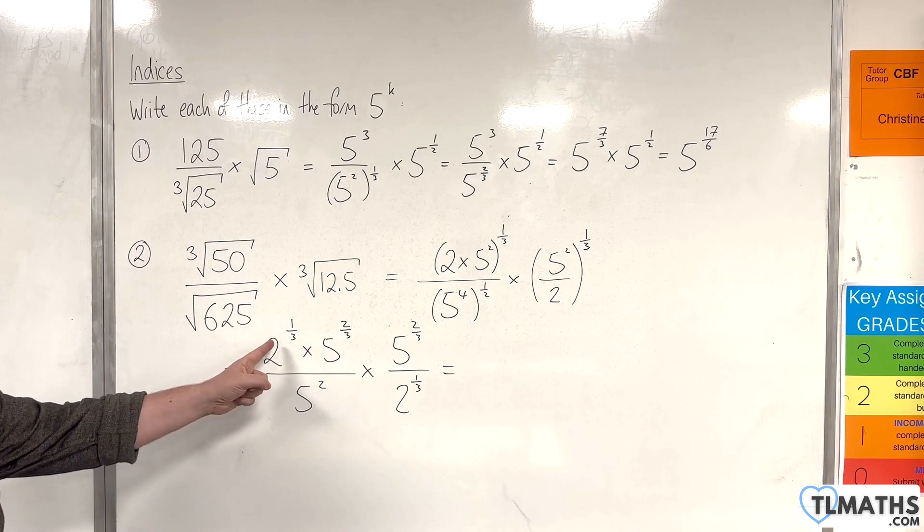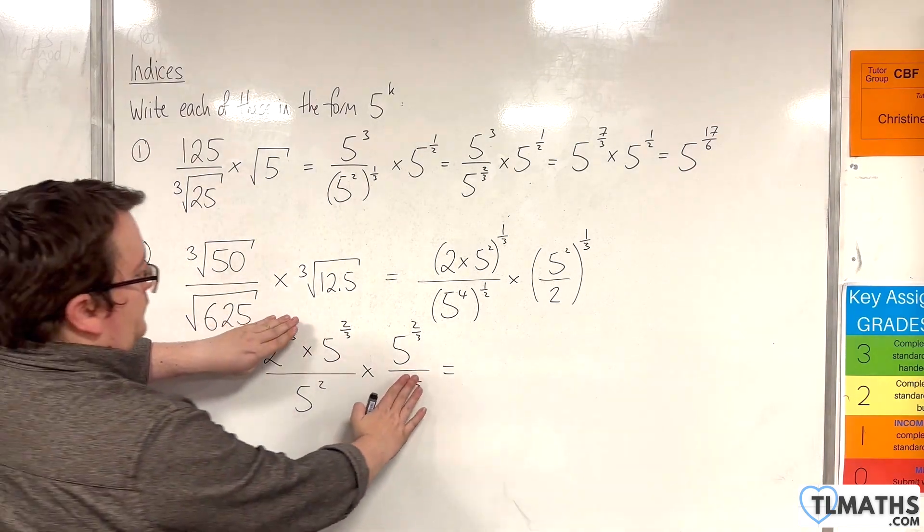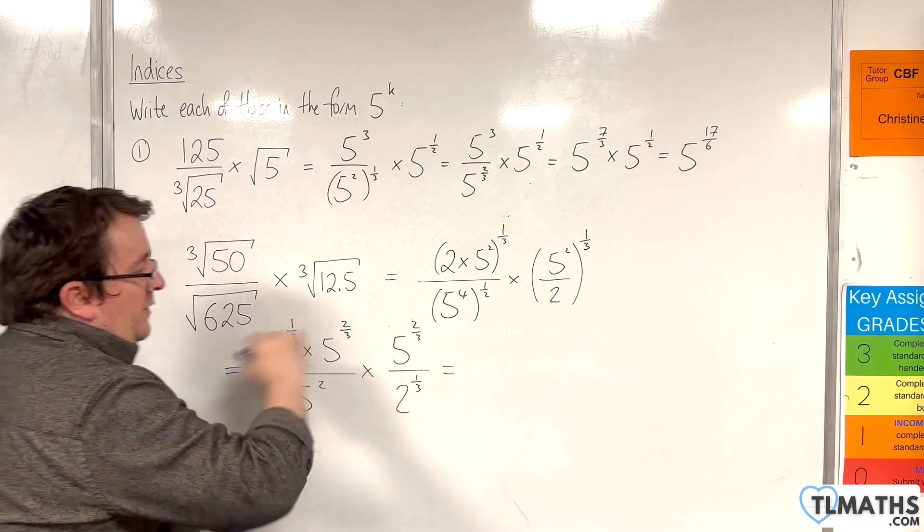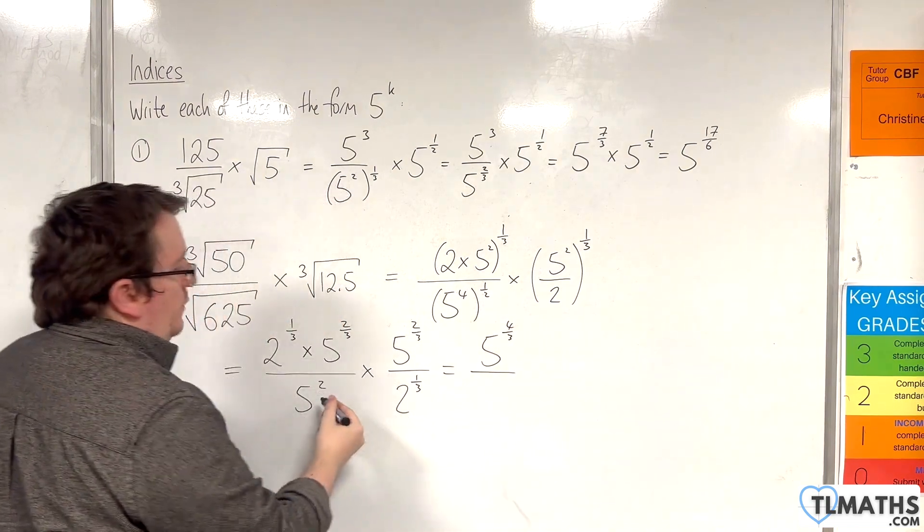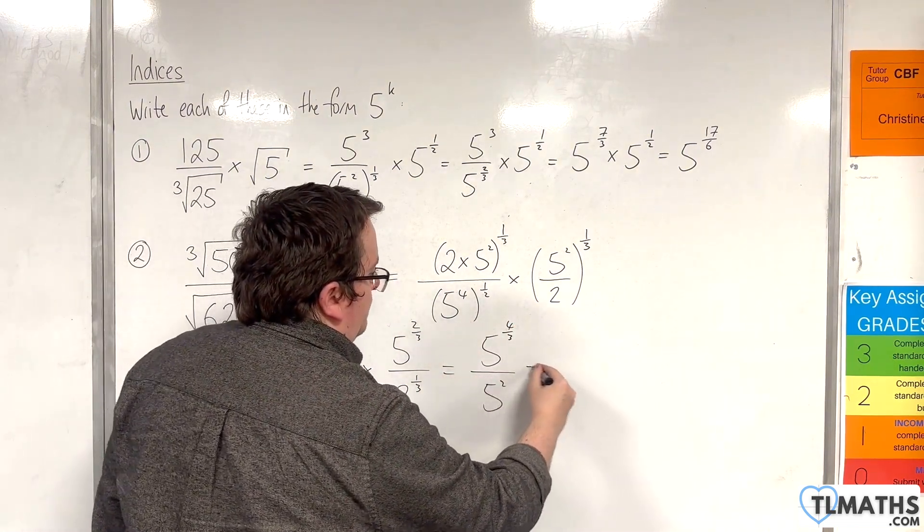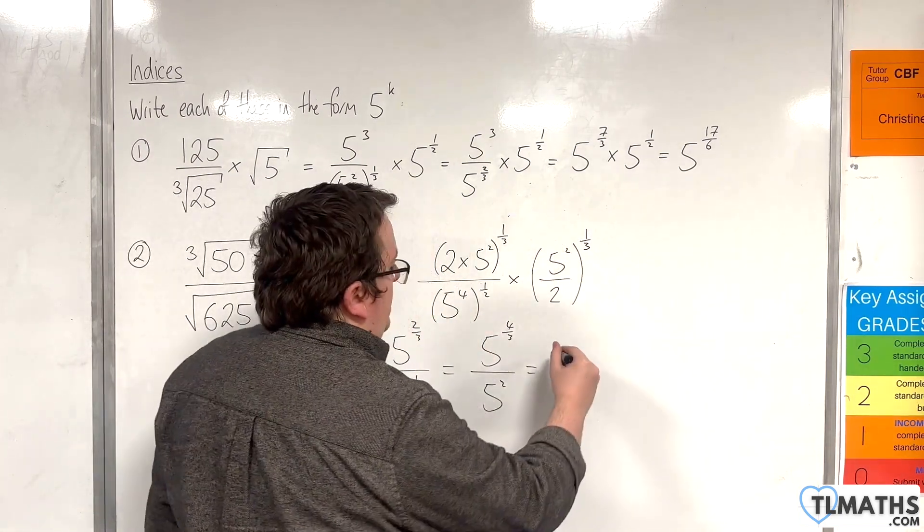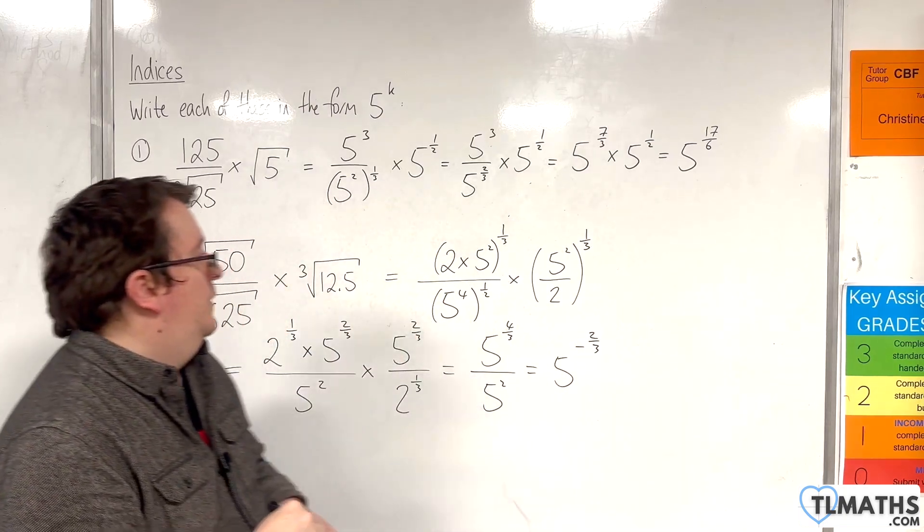Now because we've got 2 to the power of a third divided by 2 to the power of a third, that'll be 1, so that's gone. We've got 5 to the power of 2 thirds times 5 to the power of 2 thirds, so 5 to the power of 4 thirds over 5 squared. And then we've got, what do we get? Minus 2 thirds, so 5 to the power of minus 2 thirds is my answer.